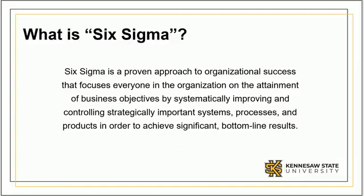What is Six Sigma? Six Sigma is a proven approach to organizational success that focuses everyone in the organization on the attainment of business objectives by systematically improving and controlling strategically important systems, processes, and products in order to achieve significant bottom-line results.